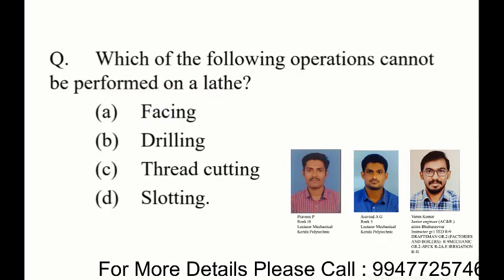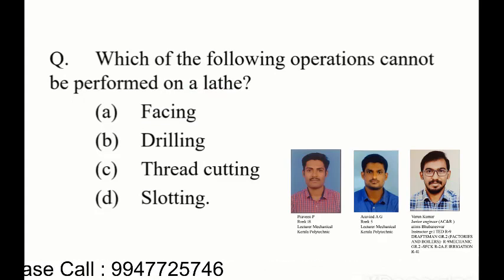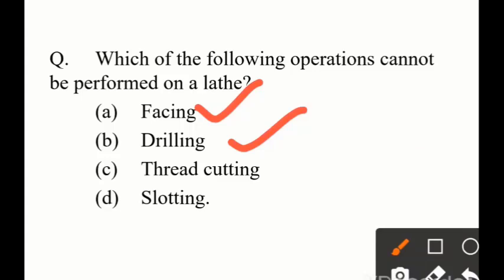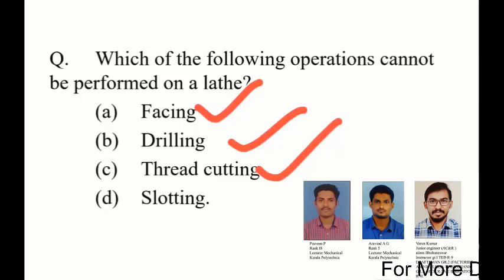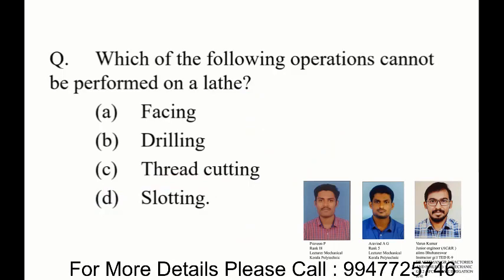Option A - Facing: the rotation of the axis is perpendicular to the tool movement, and this operation can be done by lathe. Drilling can also be done by lathe using the tailstock with a live center and drill bit fixed in the chuck. Thread cutting can also be performed on the lathe using 3 methods. Slotting, however, cannot be done by lathe. So Option D is the right answer.